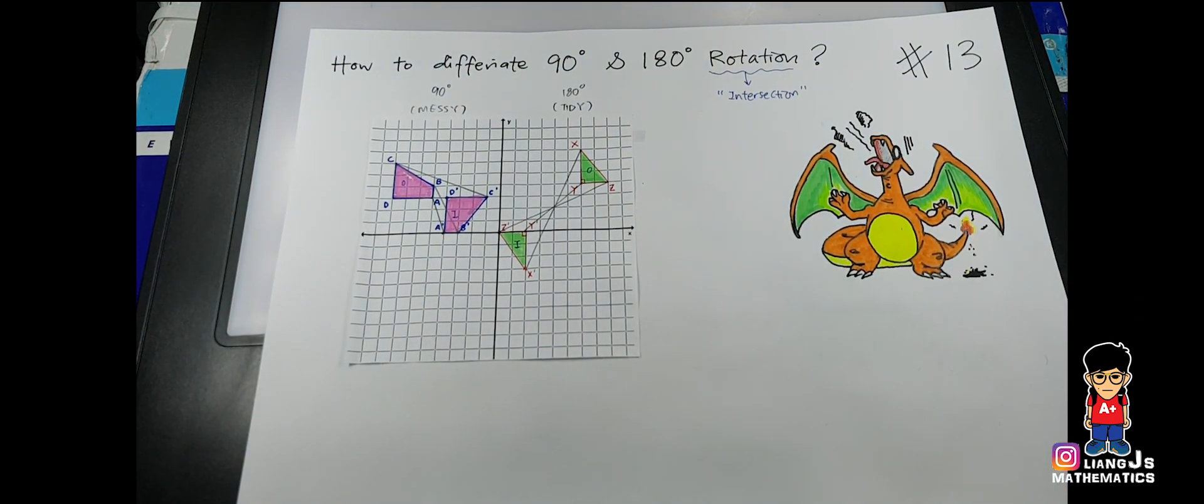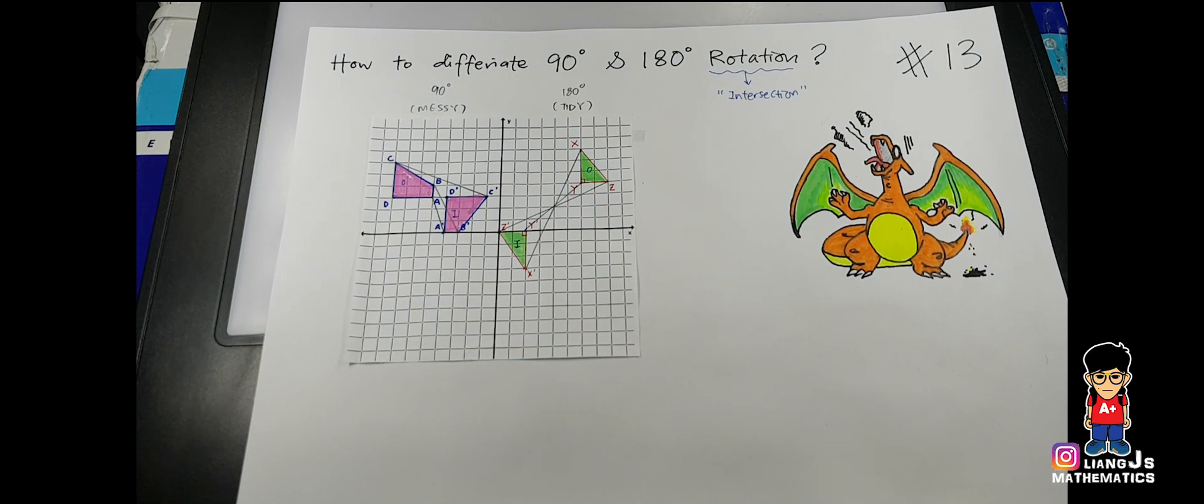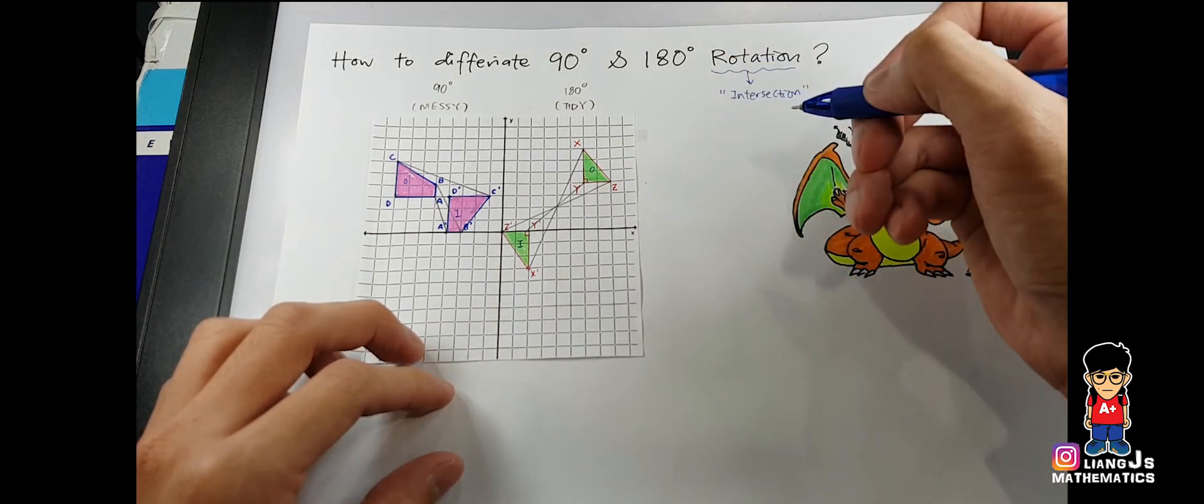But the main thing here is, when you come into this case, yes, we know how to determine 90 and 180. But the main point is they will ask you, what is the direction? Or maybe what's the rotation point itself? The most important thing under rotation is you need three points.